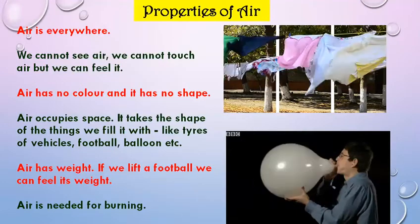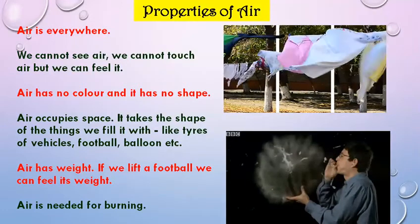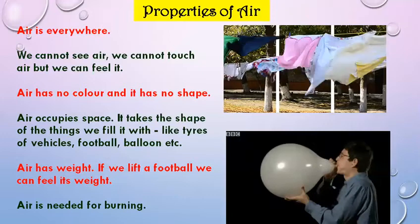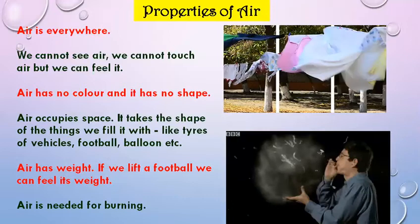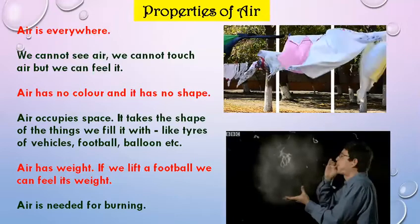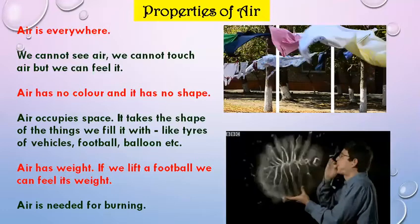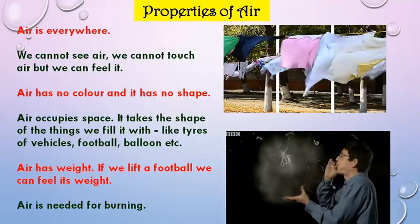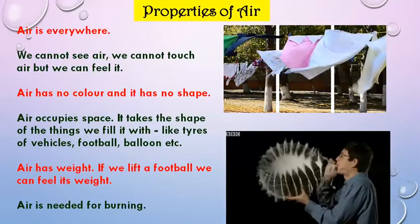Air is also needed for burning. For this, take two candles and fix them on the table. Light both the candles and cover one candle with a glass tumbler. What happens? After some time, you will see the candle covered by the glass tumbler goes off. Why? Because it could not get air to burn. A thing can keep burning only if it gets air. From this, we come to a conclusion: air is needed for burning.